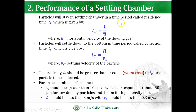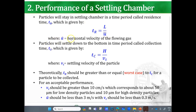Particles stay in the settling chamber for a time period called the residence time, given by t_r equals length divided by u, where u is the horizontal velocity of the flowing gas. The collection time, t_c, is equal to h over v_t — height over the terminal settling velocity. Both u and v_t are velocities: one is the settling velocity and the other is the horizontal velocity of the flowing gas.